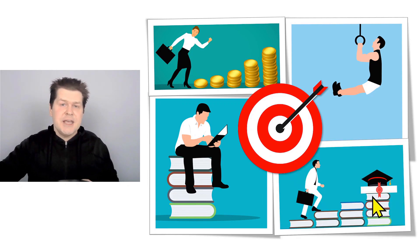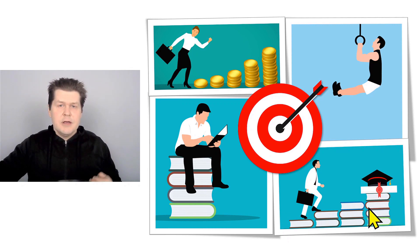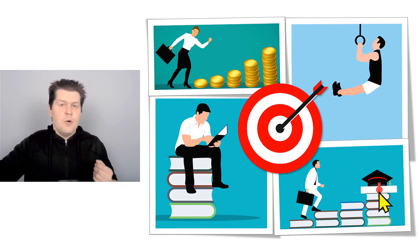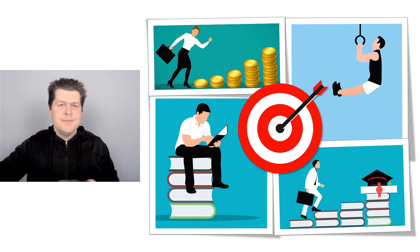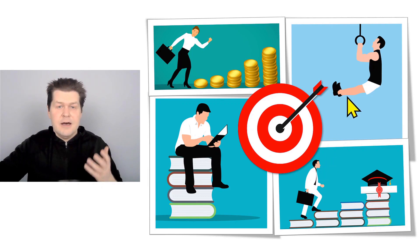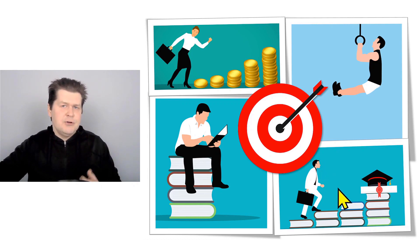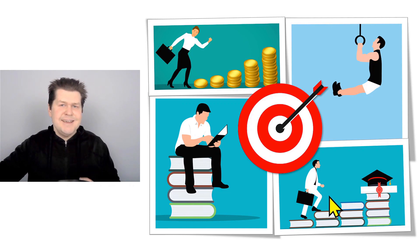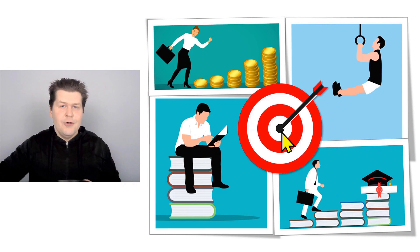Or do you have another kind of goal? Do you have an educational goal for this year? For example, an educational goal could be to study and earn a diploma or earn a degree. So these are some goals you might have: a fitness goal, a reading goal, a financial goal, or an educational goal.